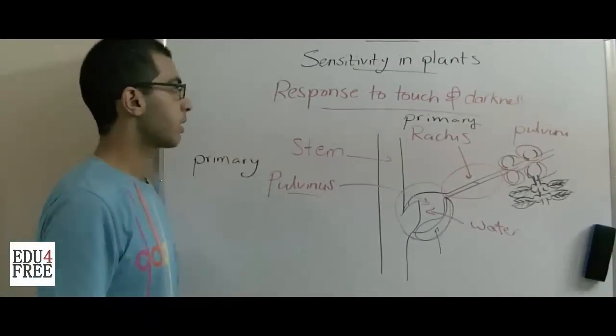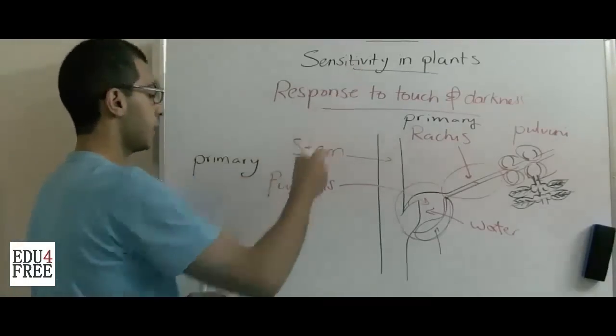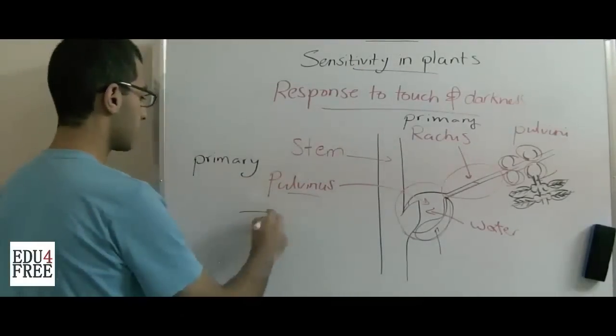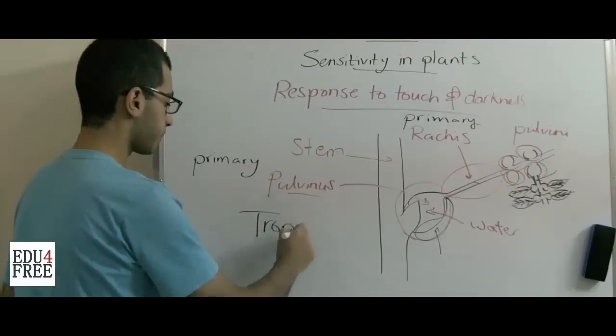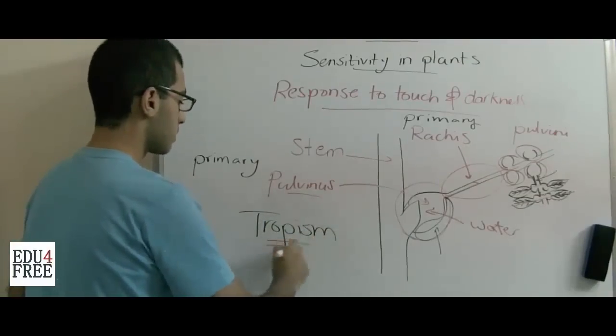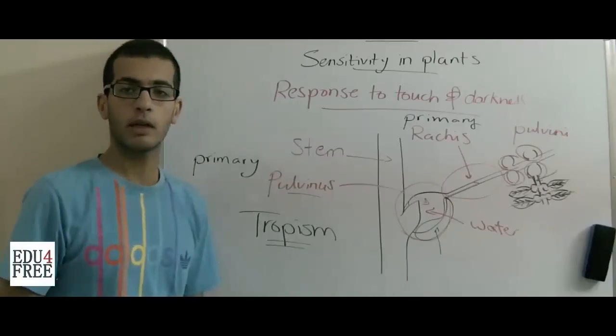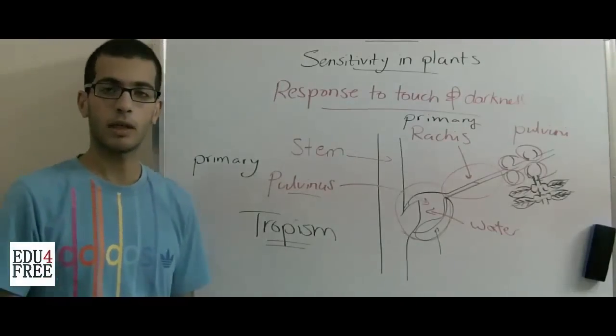Thank you very much for watching. Next time, we will talk about the next point of sensitivity in plants, which is called tropism. What's tropism? That's what we'll know next time. Thank you for watching again. See you.